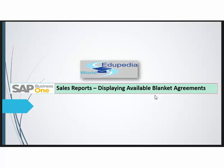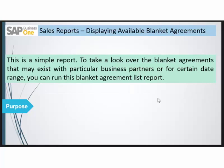In this session of training we will see about the sales report and we will learn about displaying available blanket reports. This is a very simple report. It helps the business to take a look over their blanket agreements that they have with their business partners for a certain date range, or you can choose the business partner or the items for which you want to see the blanket agreement. This is the purpose of this report.